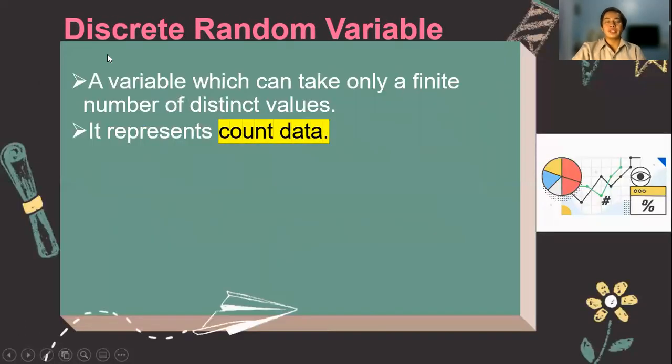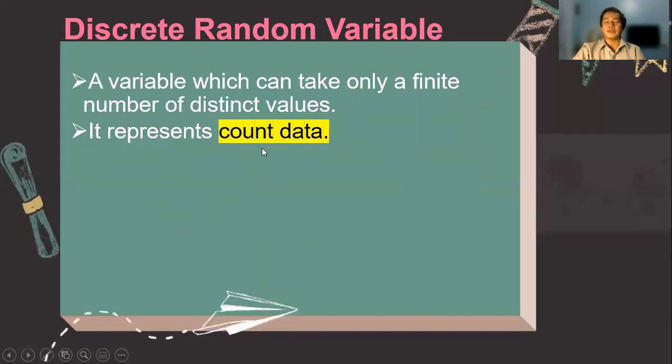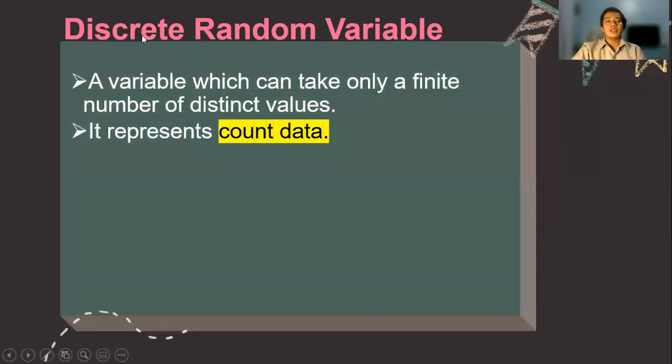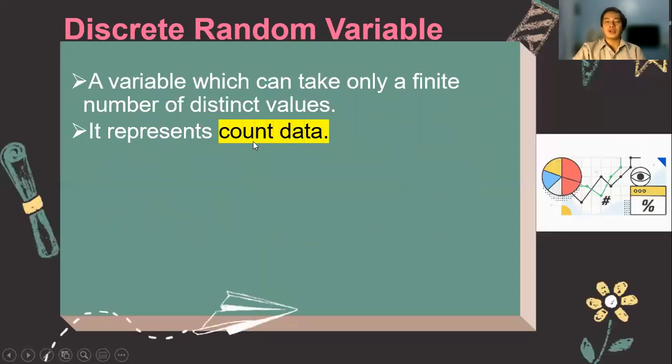So for the discrete random variable, it is a variable that can take only a finite number of distinct values. And usually we can easily recognize it because discrete variables are also what we know as count data, meaning you can easily count them. So how do you count 1, 2, 3, 4, and so on.